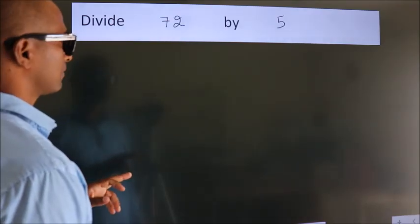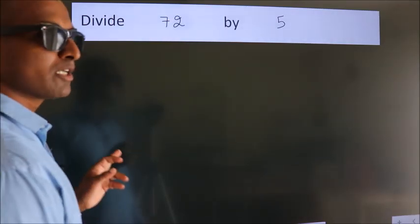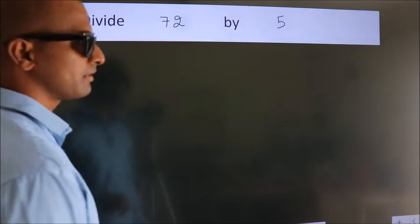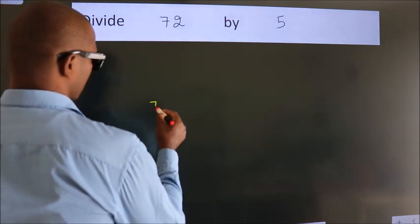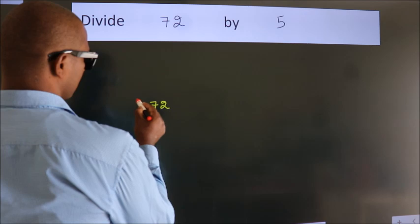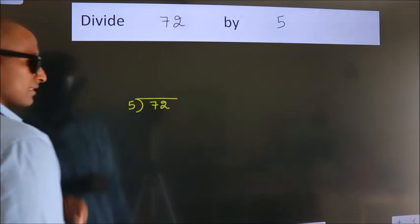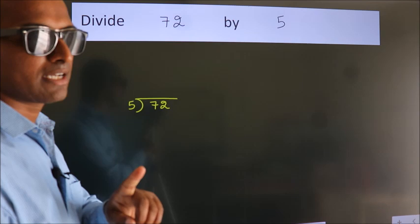Divide 72 by 5. To do this division, we should frame it in this way. 72 here, 5 here. This is your step 1. Next,